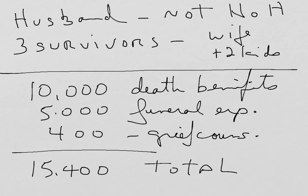You may get something like this on the exam where they give all kinds of information, but the person is not the head of the household. They may not say explicitly it's not the head of the household — they may just say the husband died and the wife made more money, or they may say nothing about it. If they do not indicate that the person who died is the head of the household, don't assume it is.